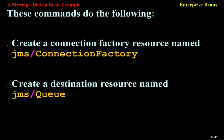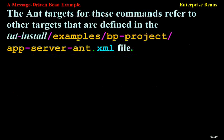These commands create a connection factory resource named jms/ConnectionFactory and a destination resource named jms/Queue. The ant targets for these commands refer to other targets defined in the TUT install examples BP project appserver ant.xml file.